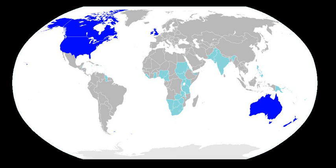The phonetics and phonology of the English language differ from one dialect to another, usually without interfering with mutual communication. Phonological variation affects the inventory of phonemes — speech sounds that distinguish meaning — and phonetic variation consists in differences in pronunciation of the phonemes. This overview mainly describes the standard pronunciations of the United Kingdom and the United States: received pronunciation and General American.